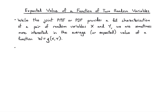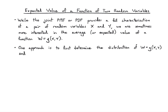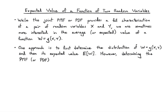Let's say our function is w, which is equal to some g of x, y. The naive approach is to just first determine the distribution of w — so we look at the joint PMF or PDF and try to work out what the PMF or PDF of w is, and then calculate the average of w. But this can be pretty hard. This process of determining the PMF or PDF of w can be quite challenging, and we actually don't need to do this.